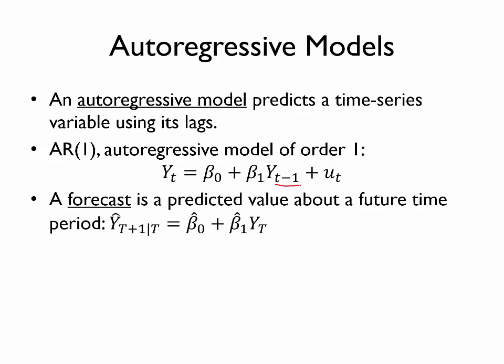We could use such a model to make a forecast, which is a predicted value about a future time period. For example, if we were to estimate this AR1 model and use the estimated coefficients beta zero hat and beta one hat, we may want to predict the value of that variable at time capital T plus one. Capital T denotes the last time period we have in our data set — perhaps the current time period — so we're predicting what's going to happen in the next time period based only on information available in the current time period. After we actually realize the value of that time series variable in the next time period, we could calculate a forecast error: simply the difference between the realized value and the forecast.